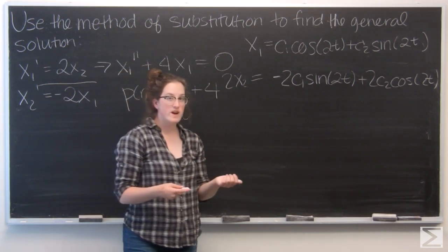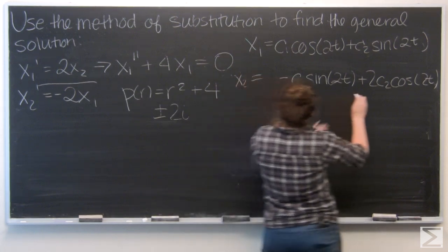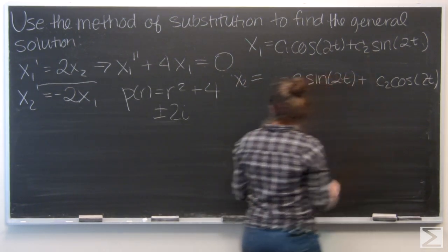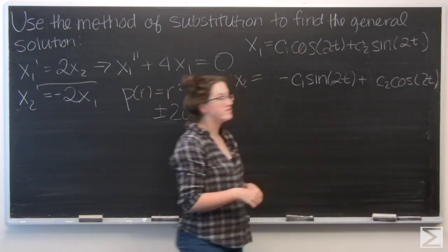So if I reduce everything by a factor of 2, I find that x2 equals negative c1 sine of 2t plus c2 cosine of 2t.